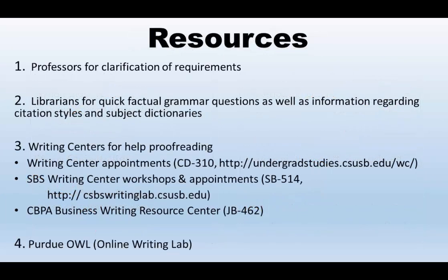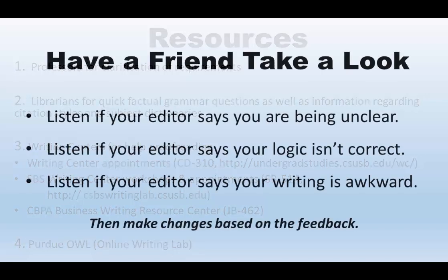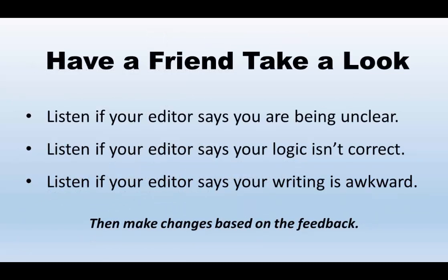After your final draft, check with someone who knows. Check with your professor to make sure you understand what she or he wants from the paper. Check with librarians if you don't know a grammar point — though we do not proofread, we do answer questions. And go to the writing centers on campus — there are several. They can help you move the final draft into the final paper. Listen and learn from their feedback. And if you have a friend who is a better writer, let them take a look. They cannot rewrite it, as that is academic dishonesty, but they can tell you if you're being unclear, if your logic is flawed, or if your writing is awkward.